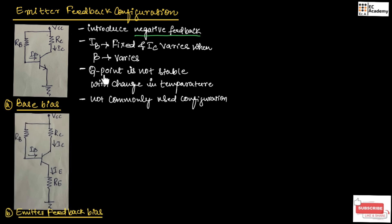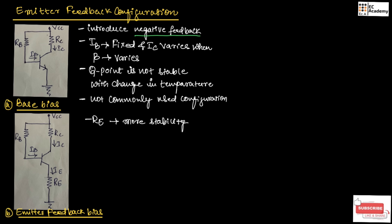Since the Q point is not stable in base bias, to overcome this disadvantage, we can use emitter feedback bias as shown in this figure. Here, the emitter resistance RE is added to the circuit to provide more stability to the amplifier circuit.